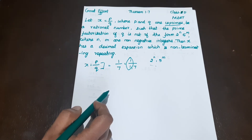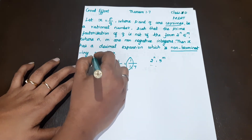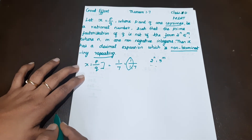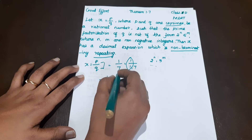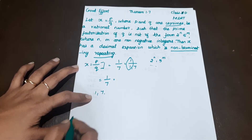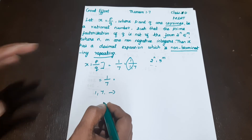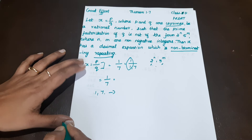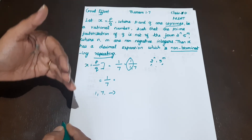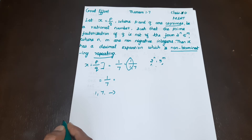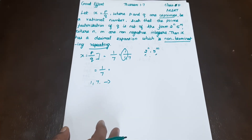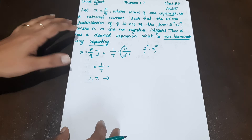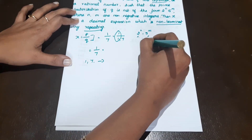So the decimal expansion will be non-terminating and repeating. Let's divide to verify — we'll divide 1 by 7.